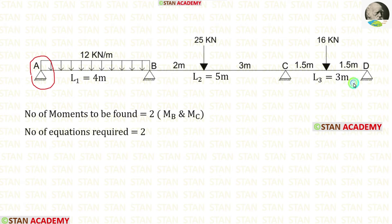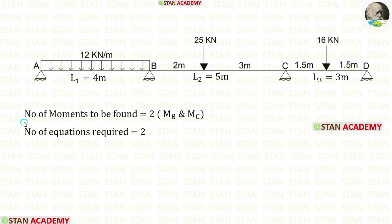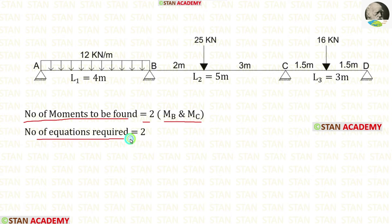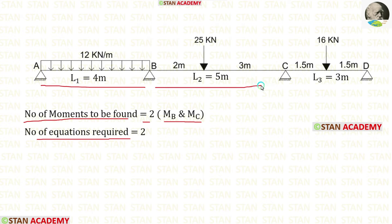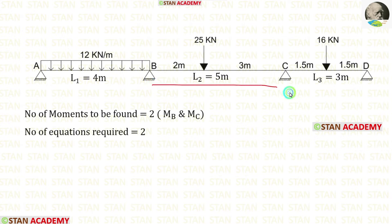At points A and D, there will be no moment because they are simply supported ends. So we have to find the moments only at points B and C. The number of moments to be found is 2: MB and MC. To find these two moments, we need two equations. Using spans AB and BC, we can make the first equation. Using spans BC and CD, we can make the second equation.